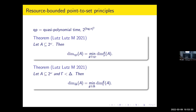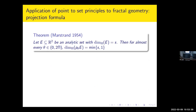The other thing I really want to show you for a minute is how useful the point-to-set principle is in a classical setting. Marstrand's theorem is proven for analytic sets and tells you that the dimension of most projections — in the sense of almost every angle in an orthogonal projection — is the minimum between the dimension of the set and one. This is for R².